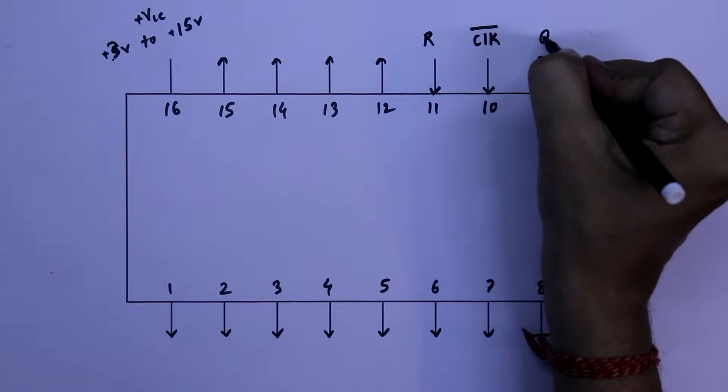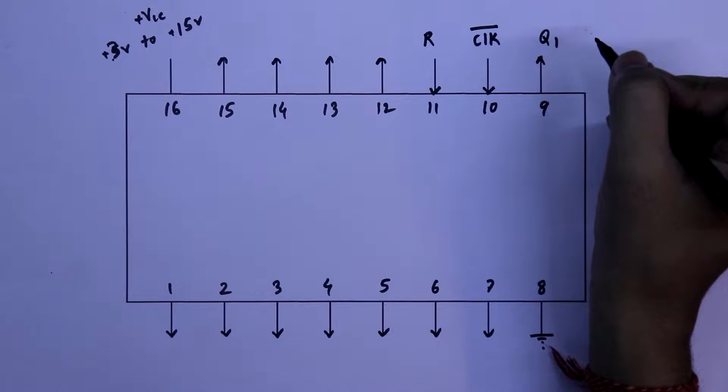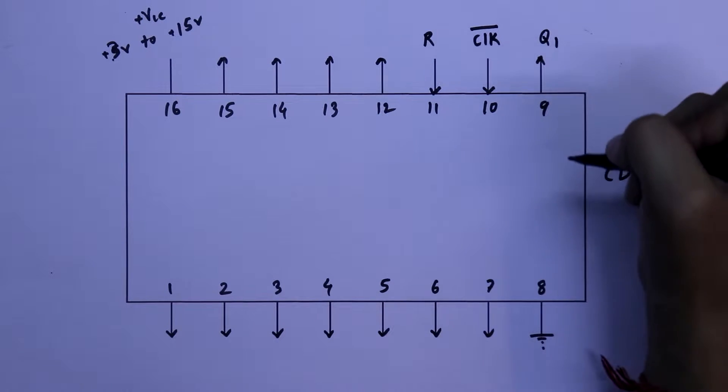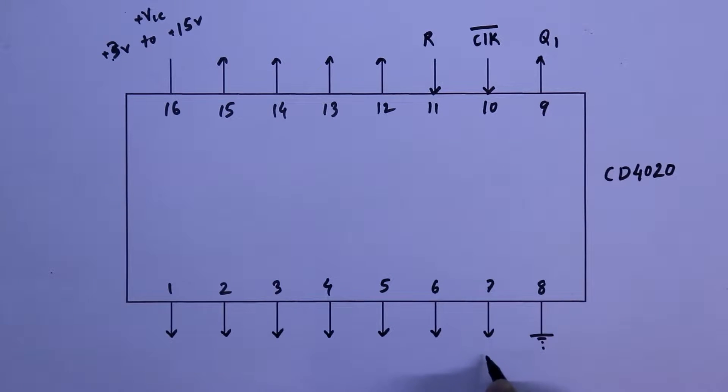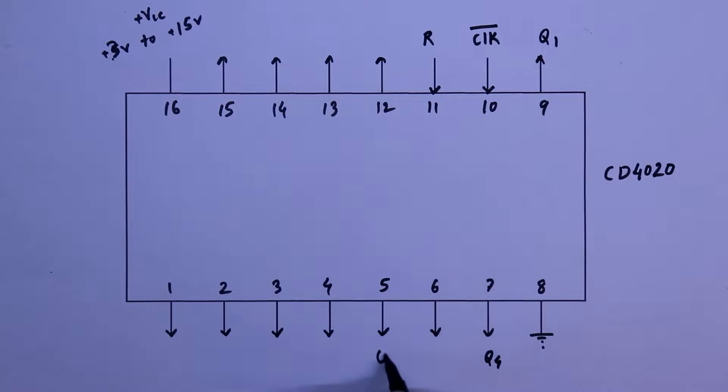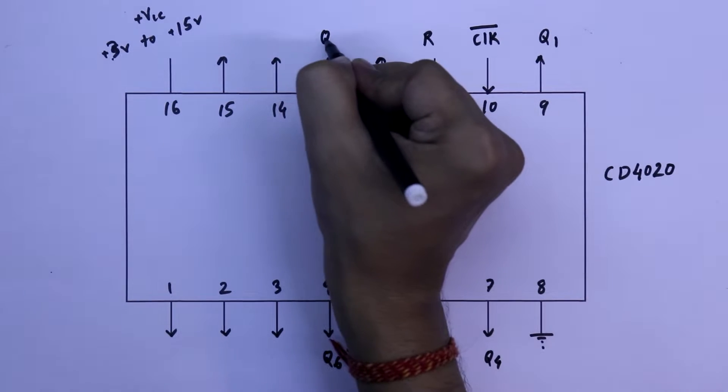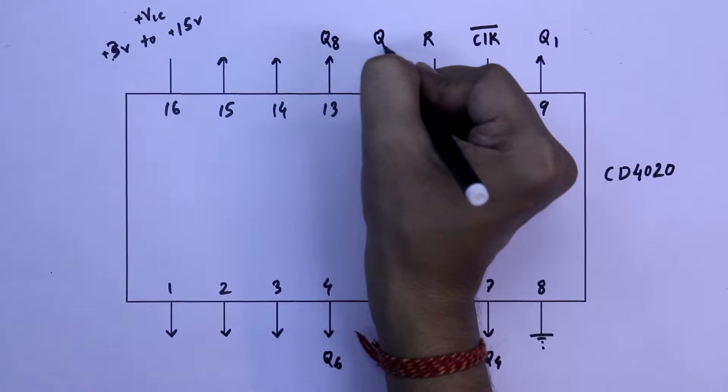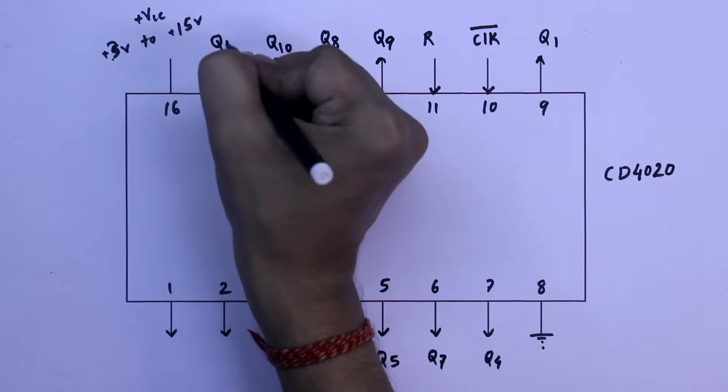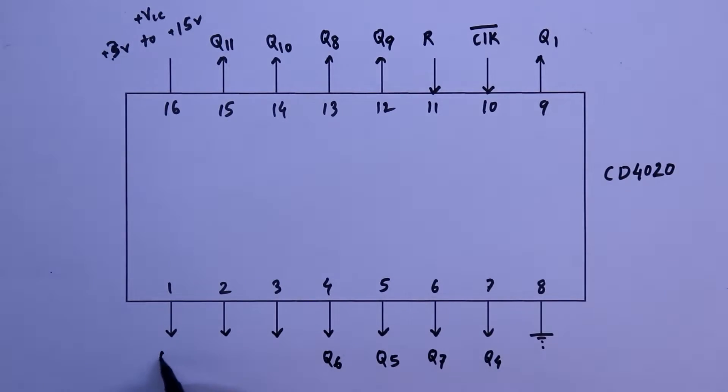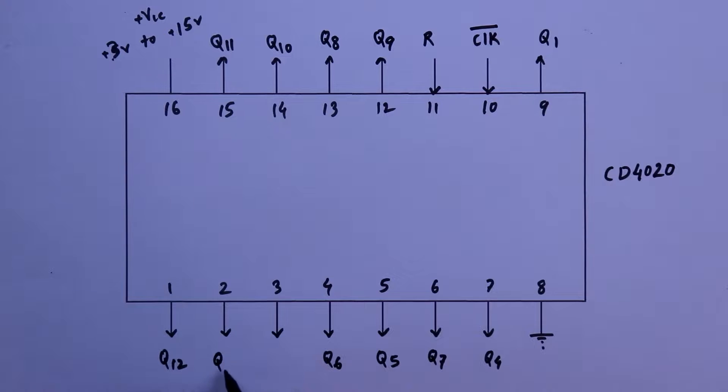Pin number 9 is Q1. We don't have Q2 and Q3 in this IC. After Q1 we have Q4, Q5, Q6, Q7, Q8, Q9, Q10, Q11, Q12, Q13 and Q14.